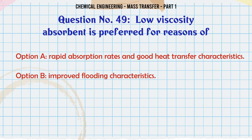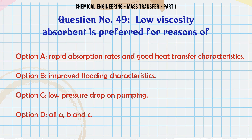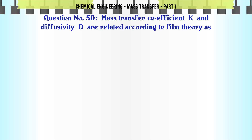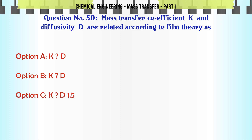Low viscosity absorbent is preferred for reasons of: A. Rapid absorption rates and good heat transfer characteristics. B. Improved flooding characteristics. C. Low pressure drop on pumping. D. All A, B and C. The correct answer is All A, B and C.